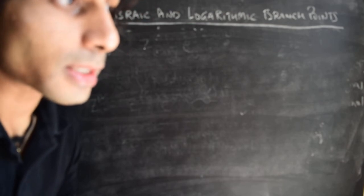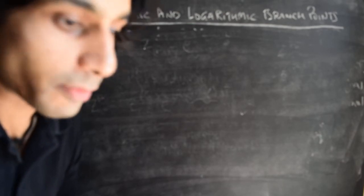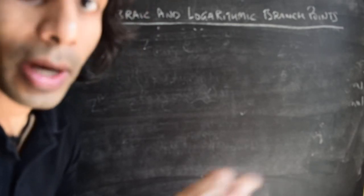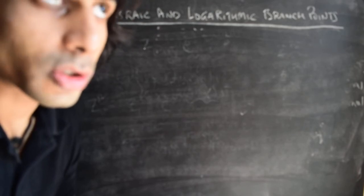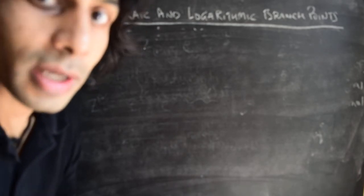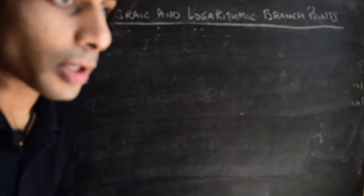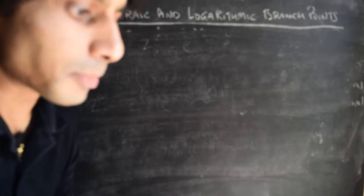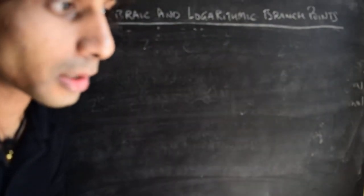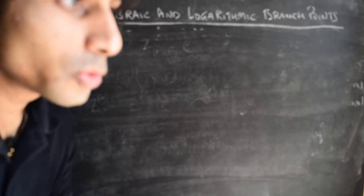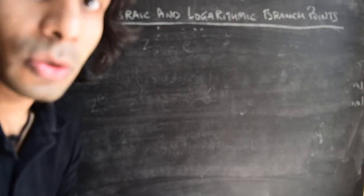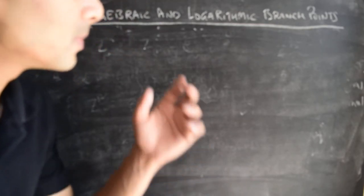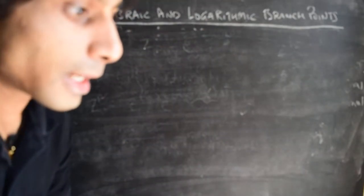An example of a logarithmic branch point is the log function itself, where you have a branch point at z equals 0. No matter how many times you wind around the origin of the z-plane, you do not come back to the value of the function you started off with, and therefore we classify this as a logarithmic branch point. In the process of talking about the complex log function, we also discovered a definition of the complex log function. In this video, let's use that definition to think about both algebraic and logarithmic branch points in a more unified way, using a function of the form z to the power of alpha, where alpha could be any arbitrary power.